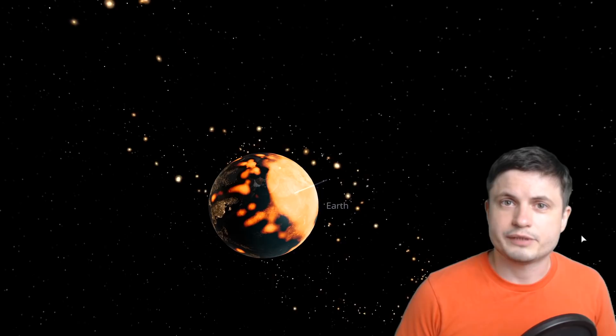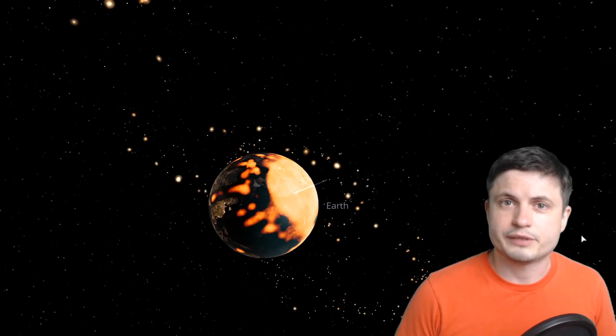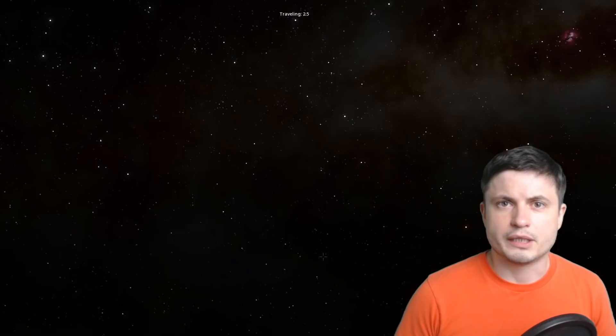So some of the modern studies such as this one that was recently released essentially investigate the long-term changes that planets go through after something very massive collides with them. And this is really important because one major difference between planet Earth and for example our nearest neighbor Venus is that they do have extremely different atmospheres and also extremely different climates.